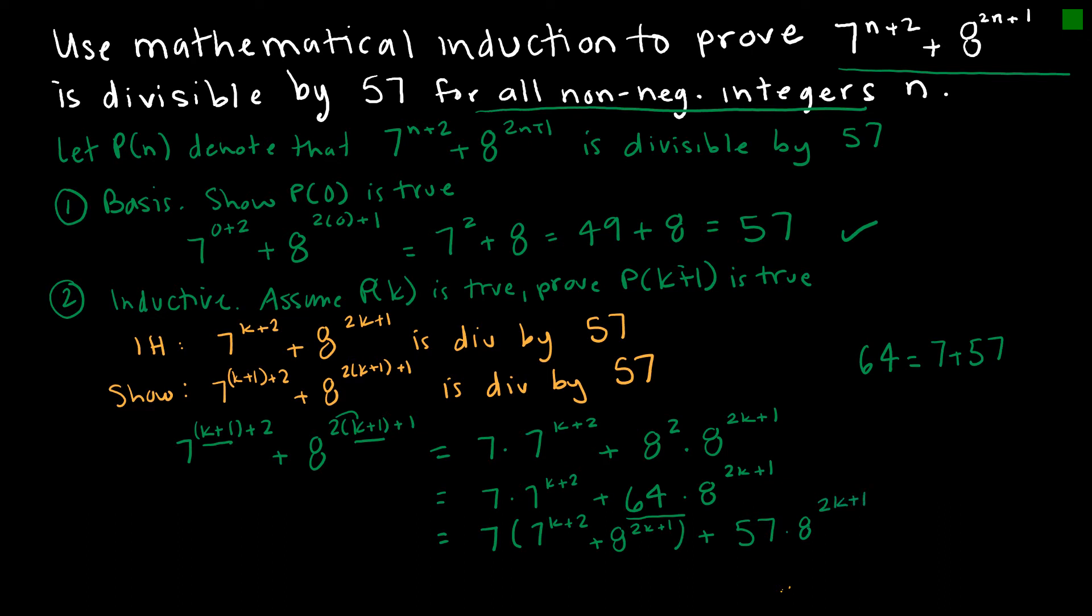So why did this do me any good? Because I already knew that this was divisible by 57 because that's what my inductive hypothesis told me. All of this is divisible by 57. Multiplying it by 7 doesn't change the fact that it's going to be divisible by 57. This side is also divisible by 57 because I have 57 times some number, so it's divisible by 57.